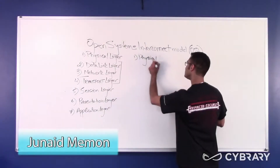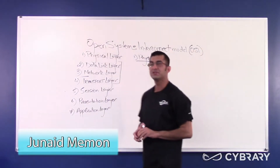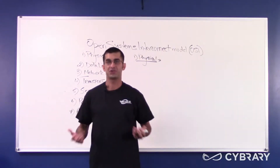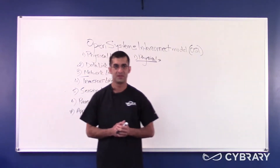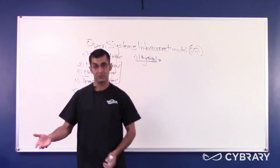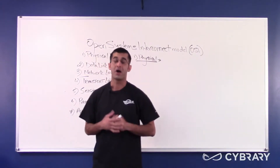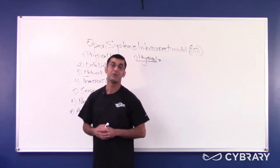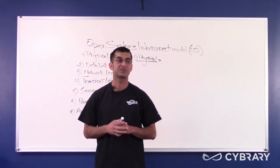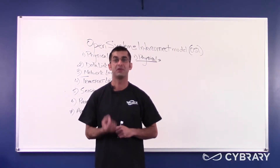The physical layer deals with stuff that you can touch. For example, cables, hubs, and repeaters. These are the three things that work specifically at the physical layer.